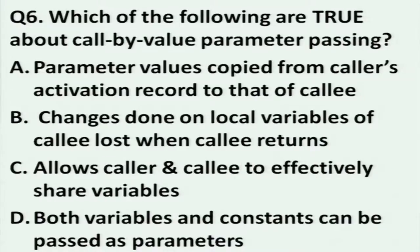Which of the following are true about call by value parameter passing? Parameter values are copied from the caller's activation record to the callee's activation record. Changes done on local variables of the callee are lost when the callee returns. Allows caller and callee to effectively share variables. And both variables and constants can be passed as parameters. In each question there may be more than one correct answer. You are required to indicate all the correct answers.